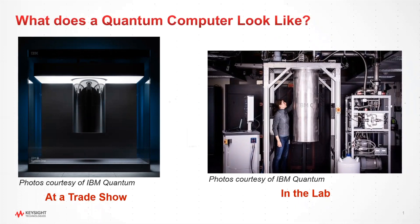On the left, you can see a photo of what a quantum computer might look like at a trade show — very clean and very crisp. On the right is what it might actually look like in the laboratory. What you're looking at here is the quantum computer in the center, which is located within a cryostat or a cooling mechanism for this superconducting computer. Everything else that you see in the photo is actually related to the cryostat and the computer's cooling system. But let's take a look under the hood and see what's going on inside.